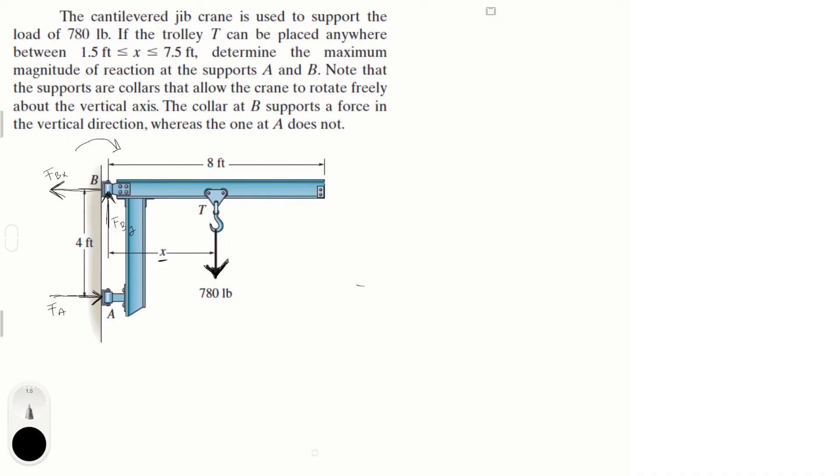Now the trolley can be placed anywhere at this distance x from 1.5 to 7.5 feet. Now what are the maximum magnitudes of reaction? So we know that we have a couple of variables. We have F of B of Y and F of A. And we know that we can eliminate two by doing the moments about B. So let's do that.